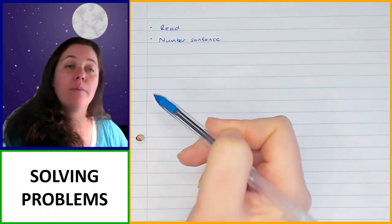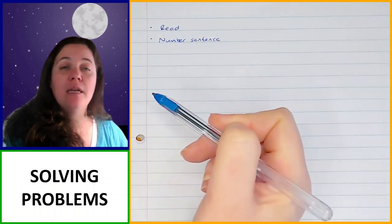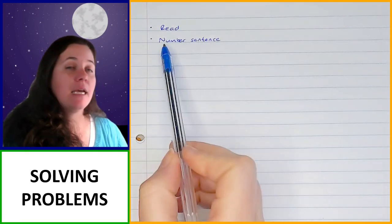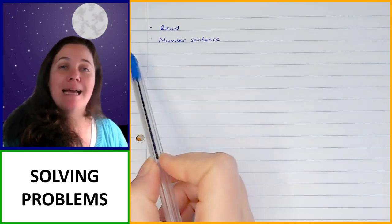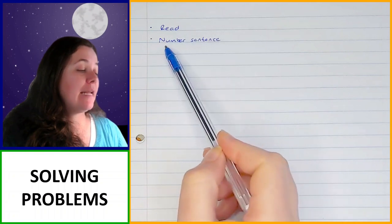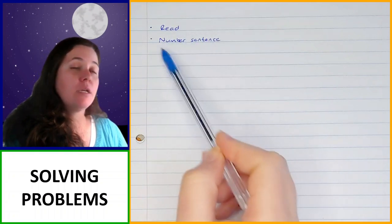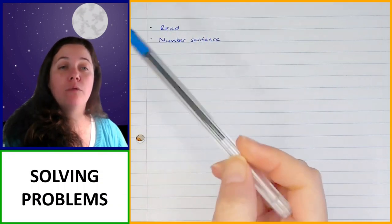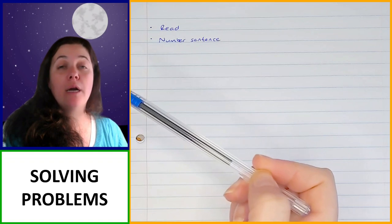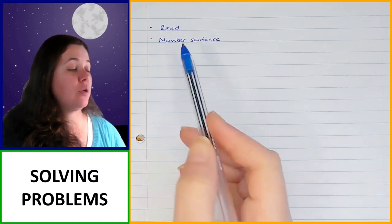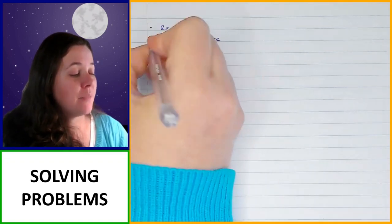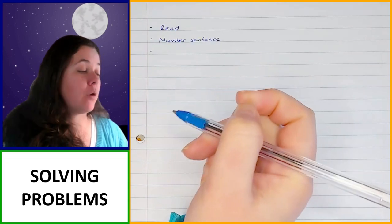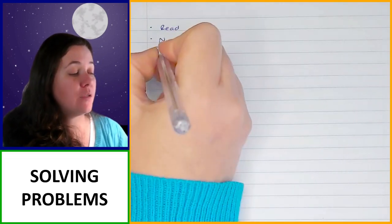It depends on what the problem is that you've been given, how you're actually going to go about solving it. So your number sentence is how you're actually going to solve it. Sometimes your word problem might require more than one step as well, so just be aware of that. Once you have identified how you're going to solve the problem, the next thing you need to do is actually solve it.